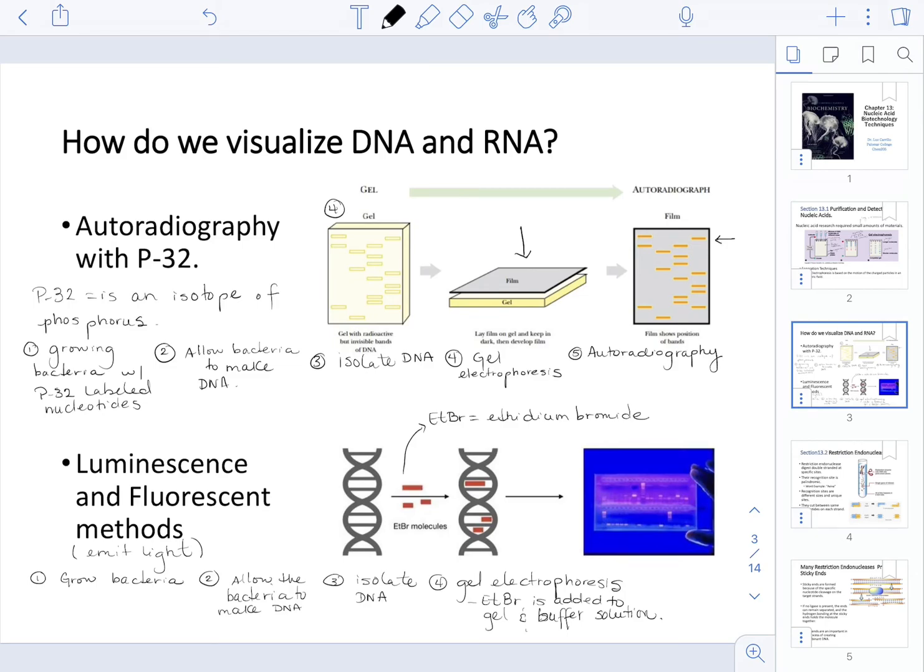So, how ethidium bromide works is that it's known to be a DNA intercalator. What that means is that ethidium bromide is going to sit in between the base pairs. And depending on the amount of DNA that you have in there, then it's going to be more ethidium bromide or less ethidium bromide incorporated.